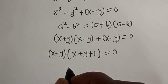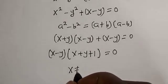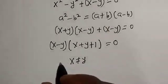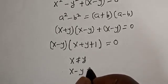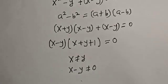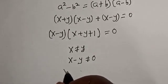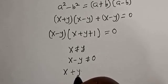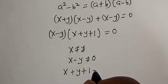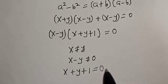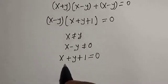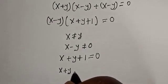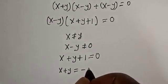But remember that we said x is not equal to y, therefore (x minus y) cannot be equal to 0. So we must have x plus y plus 1 equals 0, because that factor cannot be zero. Therefore, x plus y is equal to minus 1.